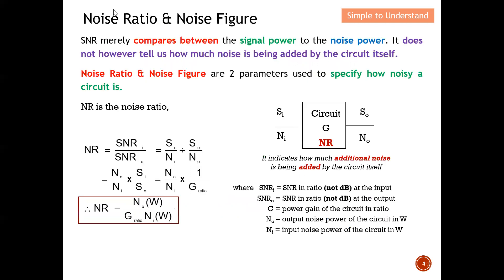Next, let's talk about noise ratio and noise figure. SNR mainly compares signal power to noise power, as described earlier. However, SNR does not tell us how much noise is being added by the circuit itself. It only indicates signal strength versus noise — not how much noise the circuit introduces.